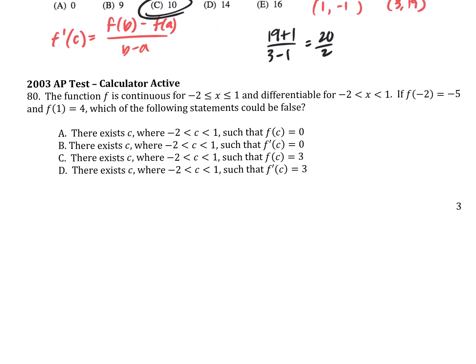If we go back to 2003, the function is continuous from negative 2 to 1 and differentiable. It gave us two points. Which of the following statements could be false? There exists some x value between negative 2 and 1 such that the y value f of c has to be 0. Does anyone remember what theorem that is? It's not mean value theorem because this isn't talking about slope.